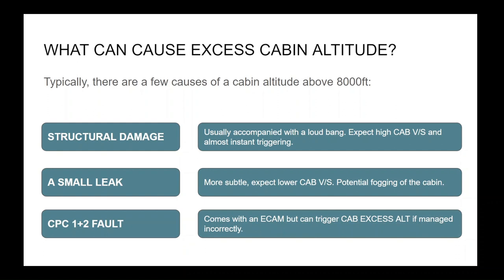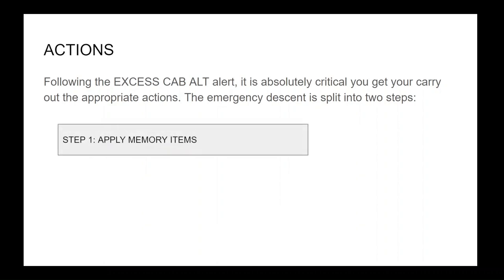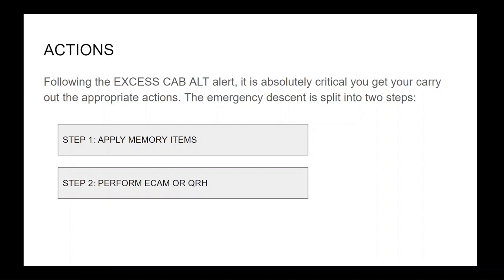Another cause is a CPC 1 and 2 fault. Usually this comes with an ECAM, but if it is mismanaged, it can trigger a cabin altitude warning. Following the excess cabin altitude alert, it is absolutely critical you carry out the appropriate actions. The emergency descent is split into two steps: Step 1 — apply the memory items; Step 2 — perform the ECAM actions or the QRH read-and-do actions.